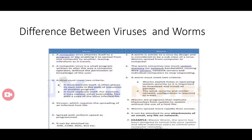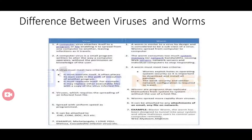In summary, the key differences between viruses and worms: a computer virus needs a host, but a worm doesn't and can run independently. Viruses require the spreading of an infected host file, while worms replicate from system to system without a host file. Worms spread more rapidly than viruses. Viruses can be attached to .exe, .com, .doc, .xls files, while worms can attach to any email attachment or file on the network. Thank you.